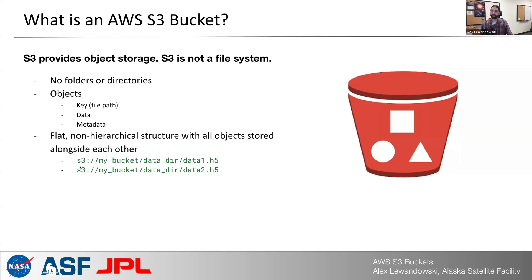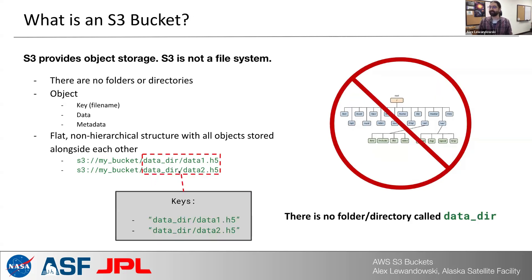You can see at the bottom there are example paths to data in an S3 bucket. There's the name of the bucket — 'my bucket' — and then what appears to be a directory called 'data dir' containing two files, data1.h5 and data2.h5. However, that is slightly deceptive, because these are not actual folders. There is no file system structure in place. The keys to these files share the same prefix, but there is no actual directory or folder called 'data dir' — they just share the first part of their keys.